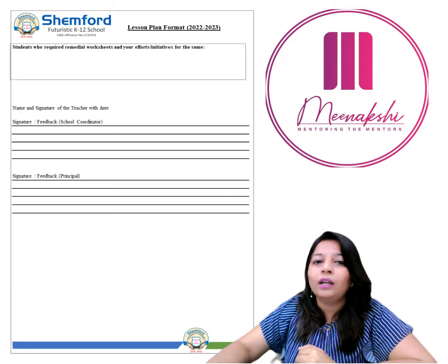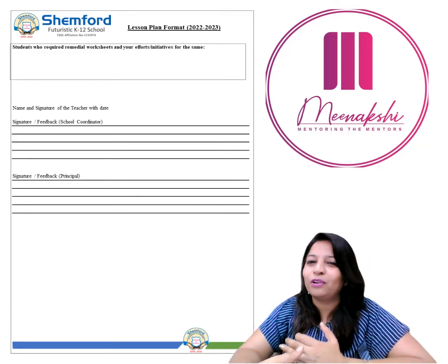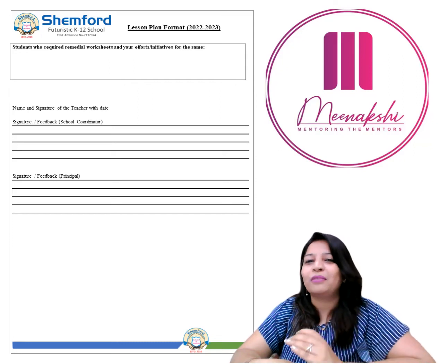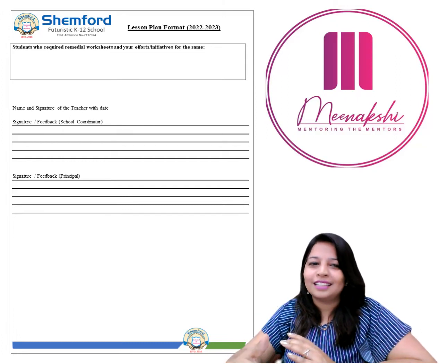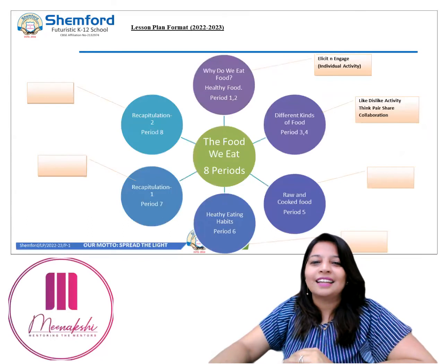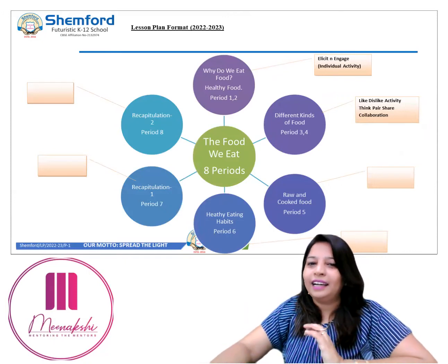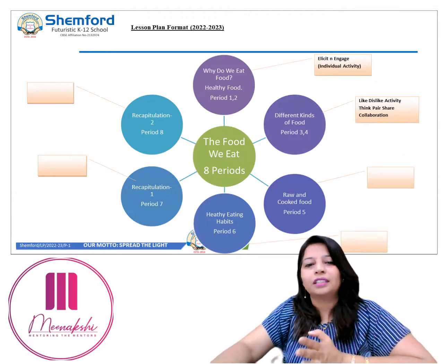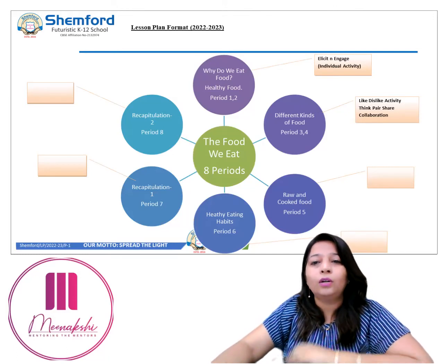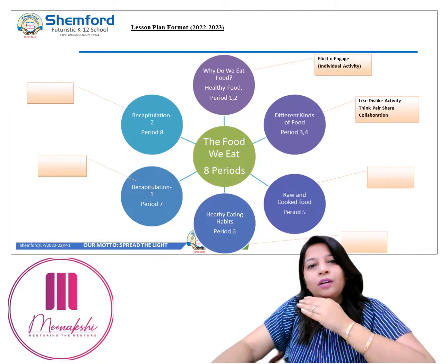Regarding students who require remedial worksheets — when you make a chapter this interesting, very few children will need remedial support; most will be enthusiastic. Then add your name, signature, date, school coordinator's feedback, and principal's feedback. The chapter at a glance covers all eight periods: what happens in periods one and two — elicit and engage with individual activity — and periods three and four — think-pair-share and collaboration.